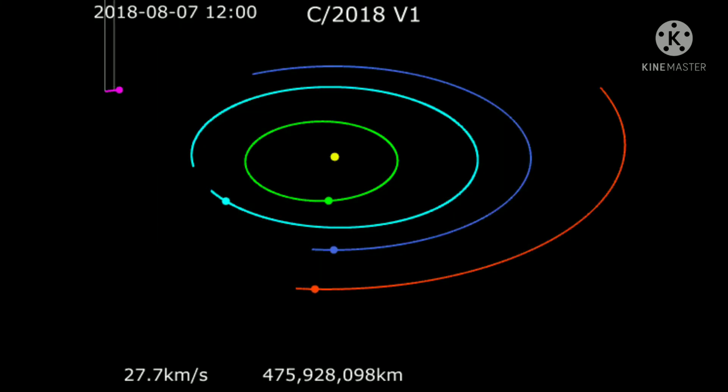Known planets are eight: Mercury, Venus, Earth, Mars, Saturn.